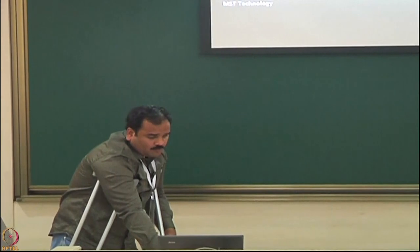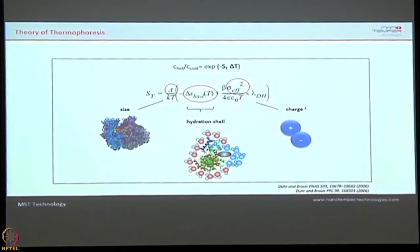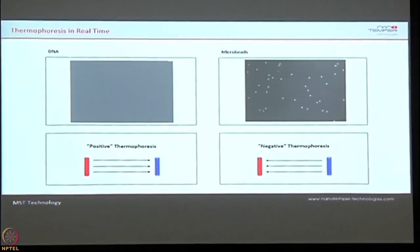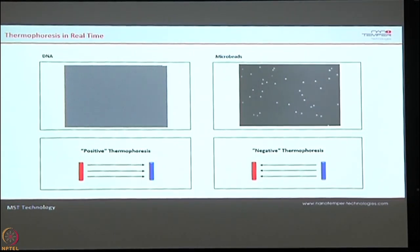Similarly, there is also negative thermophoresis — for example, glass beads when heated move towards the heat rather than away from it. In principle, when you are doing a thermophoresis experiment you always see these two phenomena: either molecules move towards the heat or they move away from it. In our principle you can measure both movements.